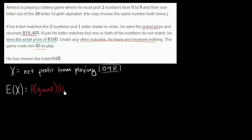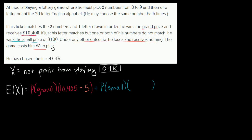Well, he gets $10,405, but his net profit is what he gets minus what he paid to play, so he paid $5 to play — that gives a net profit of $10,400. Plus the probability of getting the small prize times the net profit of the small prize: you get a payoff of $100 minus $5 to play, which is $95.